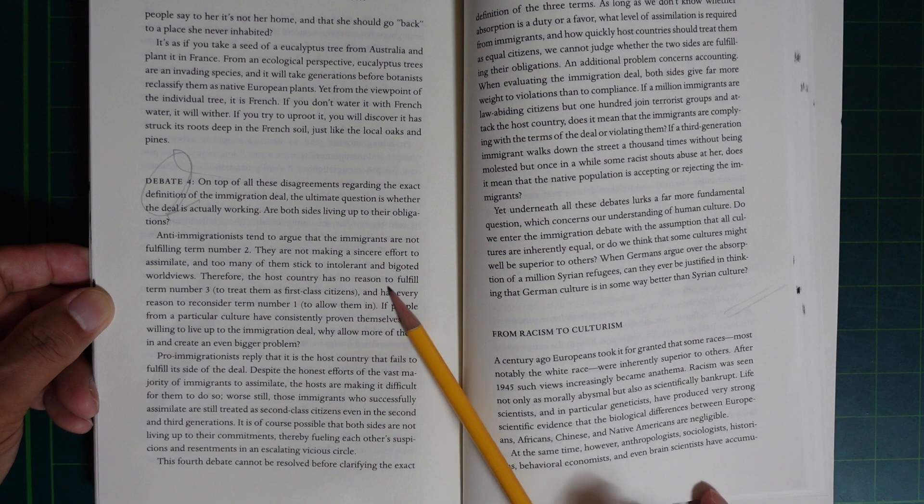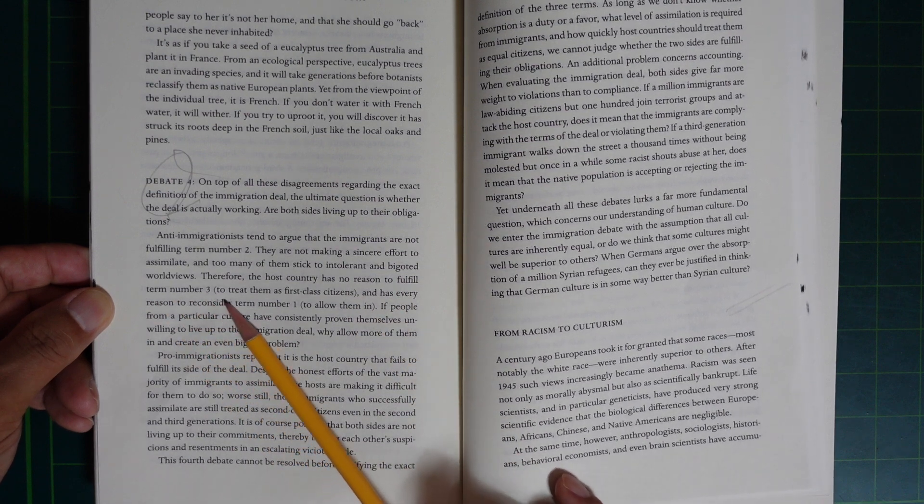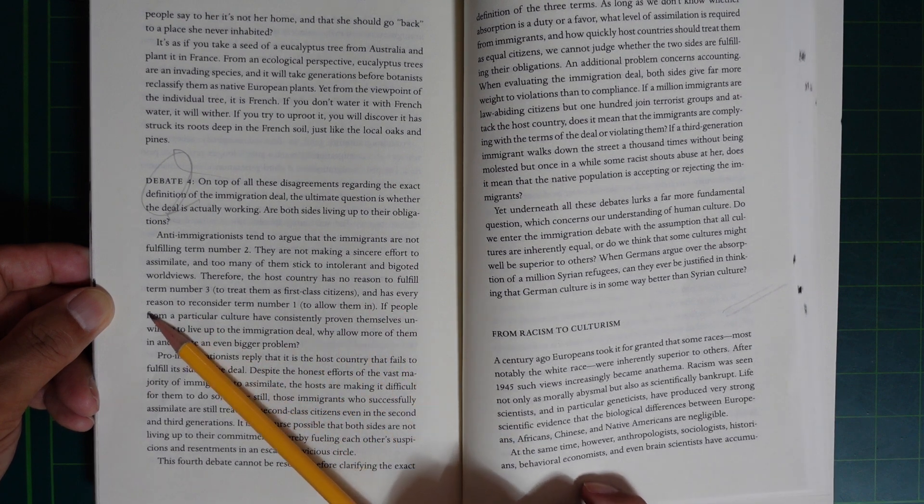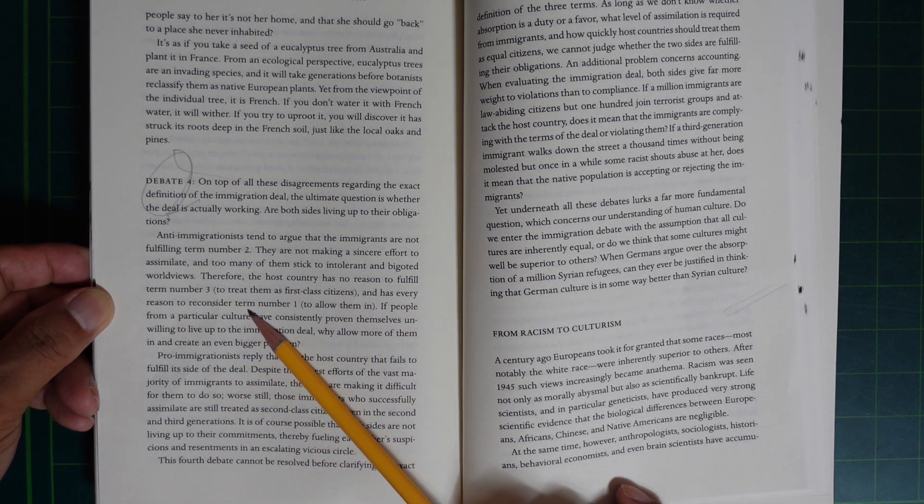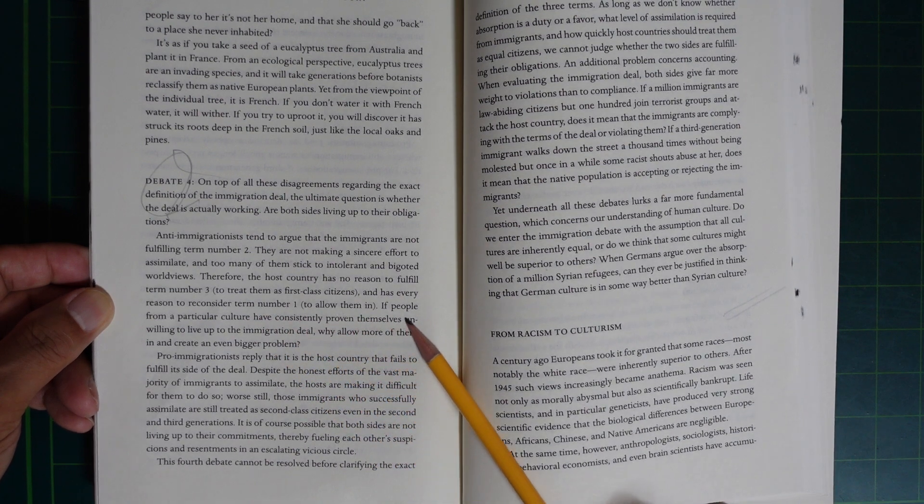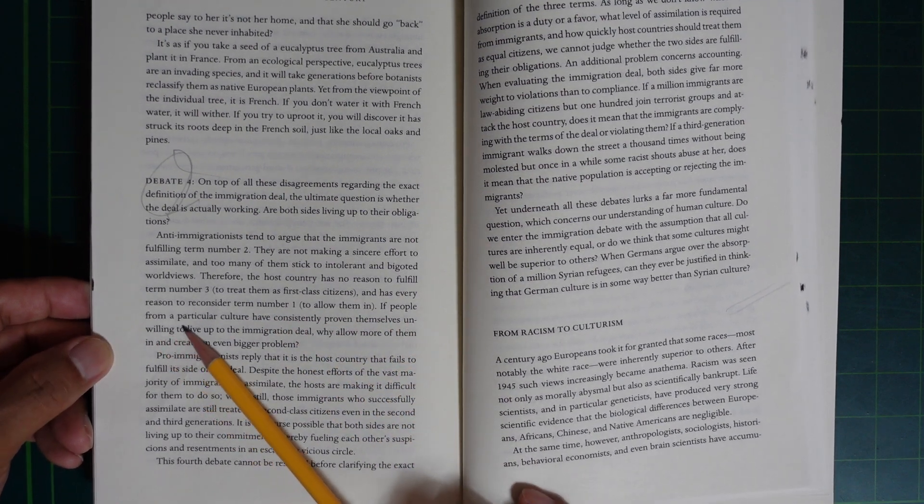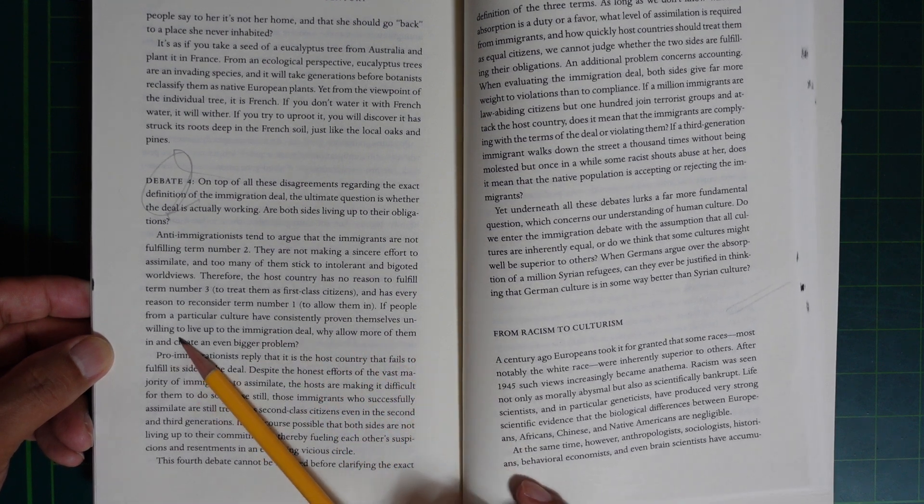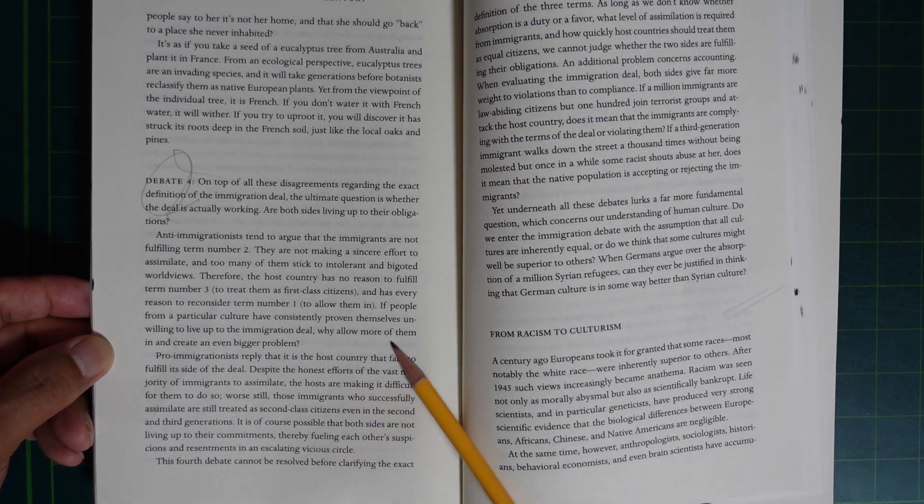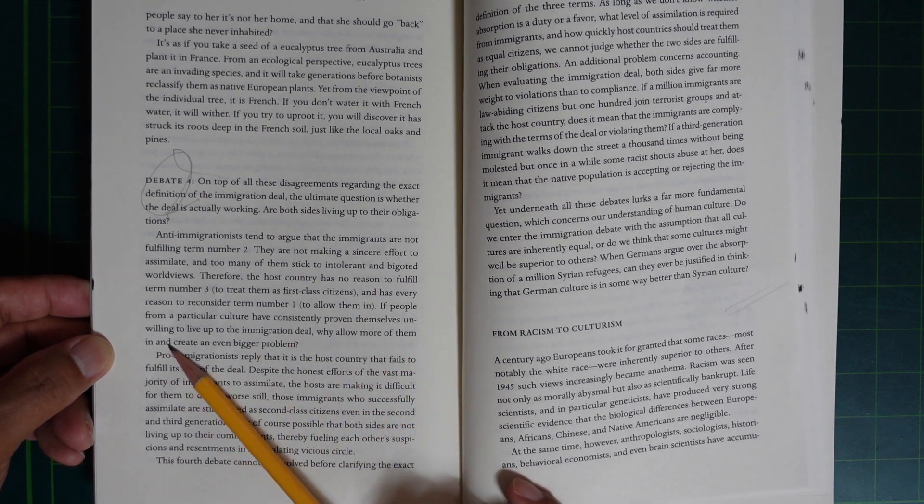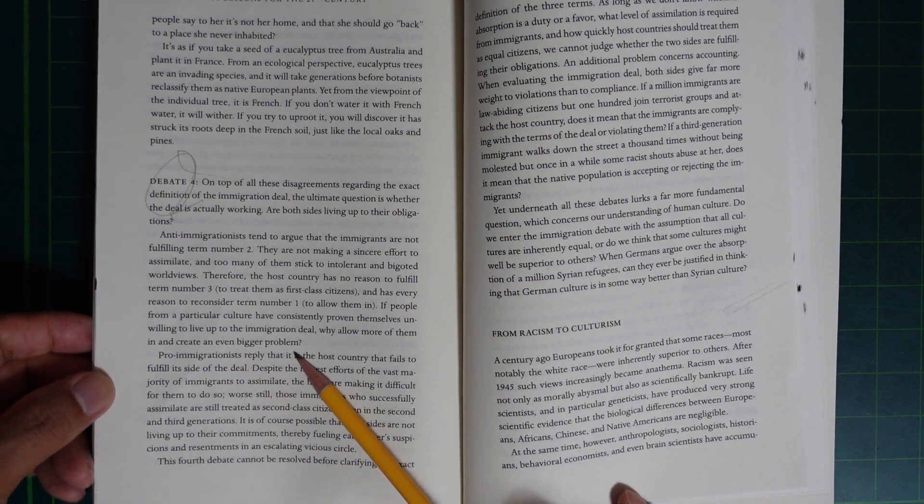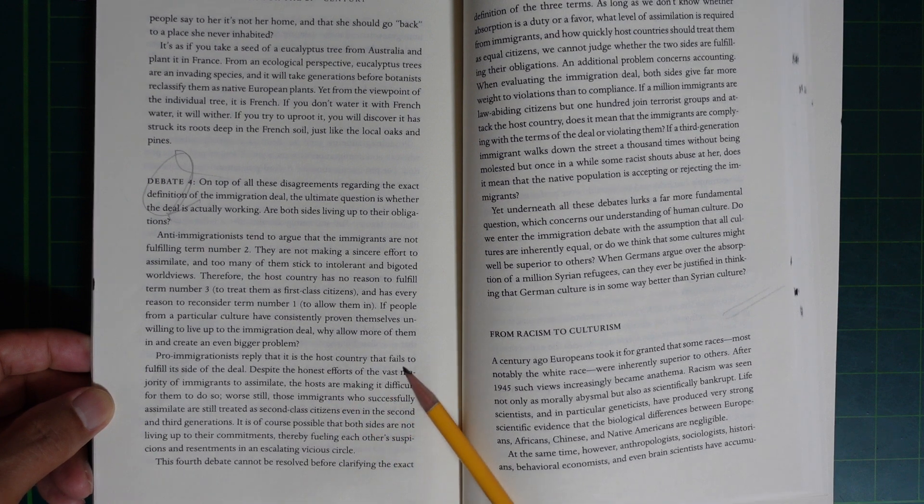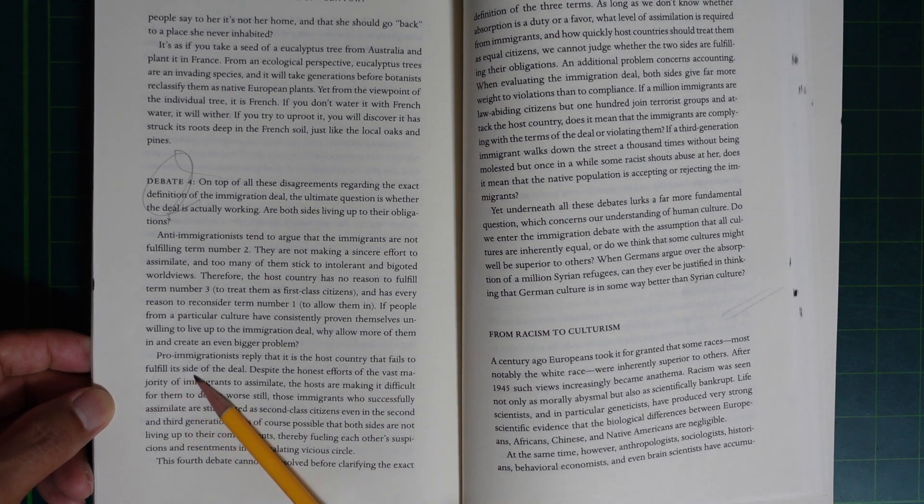the host country has no reason to fulfill term number 3 to treat them as first-class citizens, and has every reason to reconsider term number 1 to allow them in. If people from a particular culture have consistently proven themselves unwilling to live up to the immigration deal, why allow more of them in and create an even bigger problem?